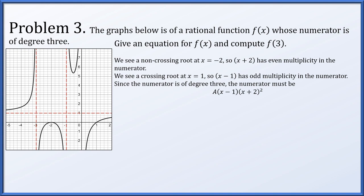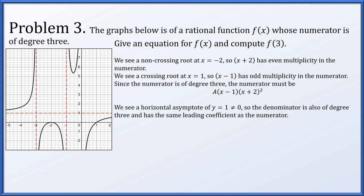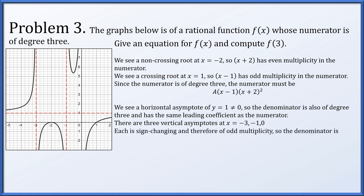The graph shows a horizontal asymptote at y = 1, which is not y = 0, so the numerator and denominator have the same degree and the same leading coefficient. There are three vertical asymptotes at x = −3, x = −1, and x = 0, all sign-changing (odd multiplicity). Since we need a degree-3 denominator with three simple asymptotes, the denominator is a·(x + 3)(x + 1)(x).